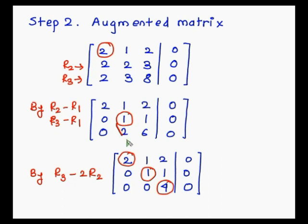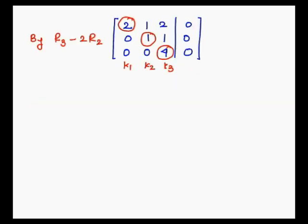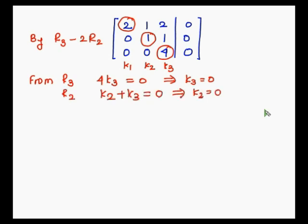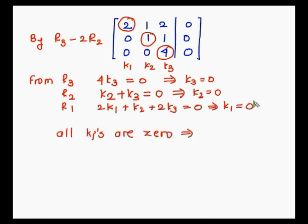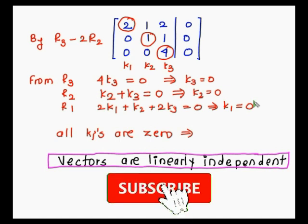This is now our reduced row echelon form. From R3: 0*k1 + 0*k2 + 4*k3 = 0, which implies k3 = 0. From R2: k2 + k3 = 0, which implies k2 = 0. From R1: 2*k1 + k2 + 2*k3 = 0; substituting the values, we get k1 = 0. So k1 = 0, k2 = 0, k3 = 0 — all ki values are zero. By definition, the vectors are linearly independent.